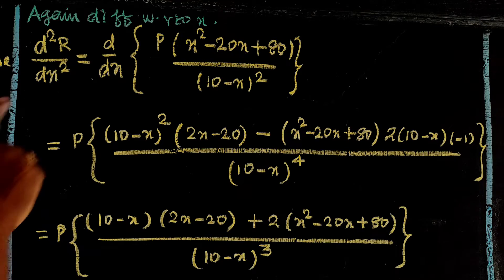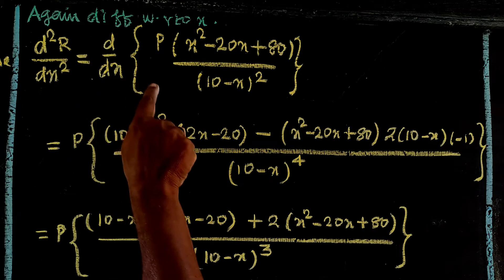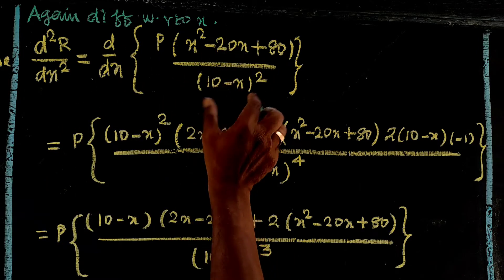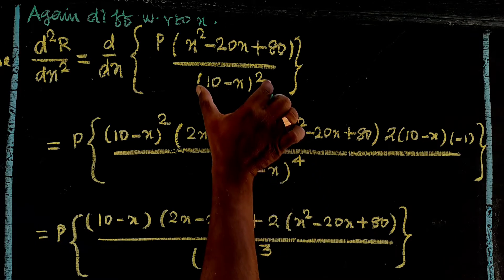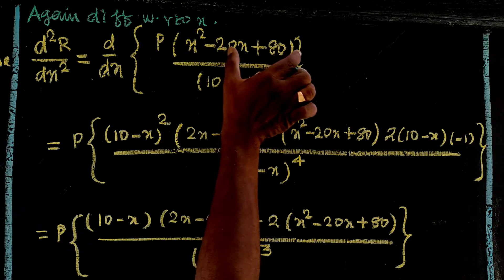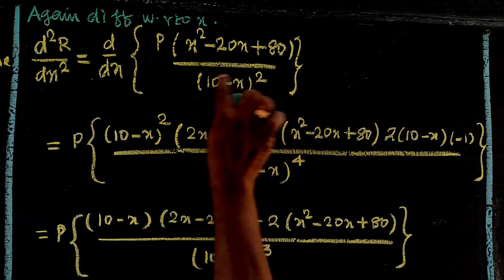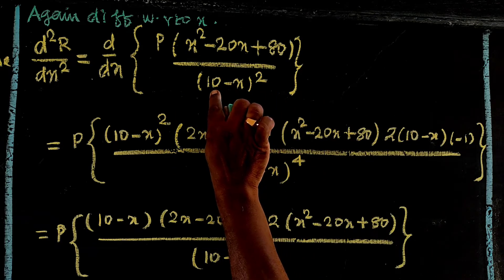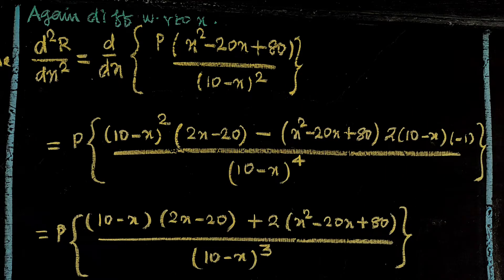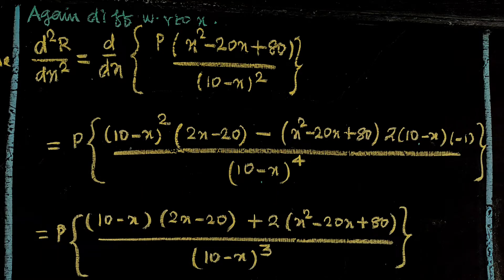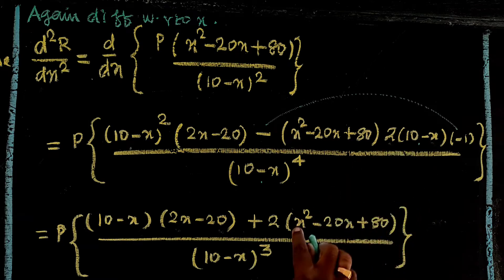Differentiating again to find the second derivative d²R/dx²: applying the quotient rule again. With u = x² minus 20x plus 80 (so u' = 2x minus 20) and v = (10 minus x)², applying the chain rule gives v' = 2 times (10 minus x) times (minus 1). The numerator simplifies with cancellations.